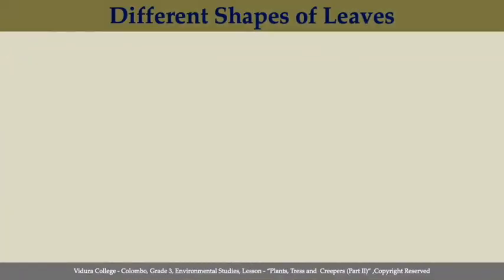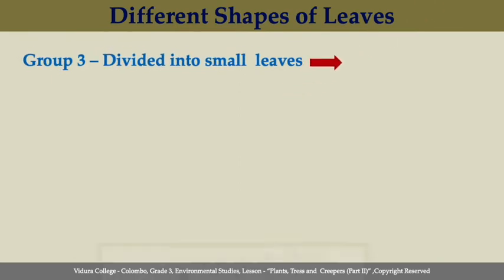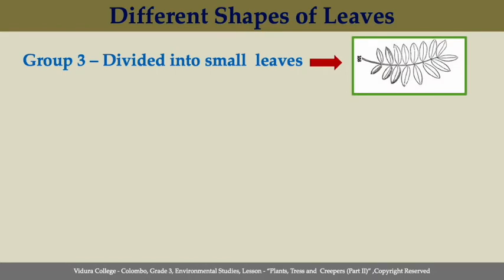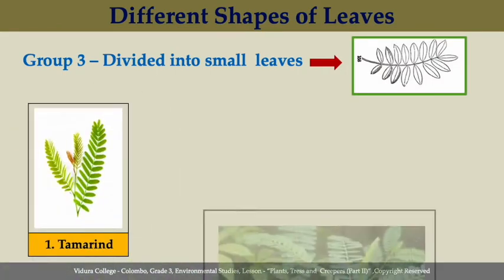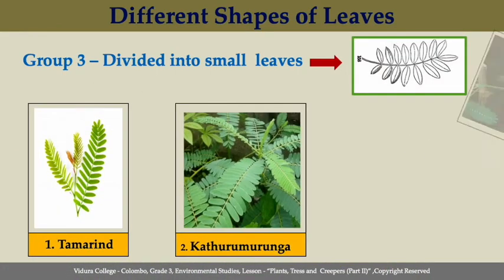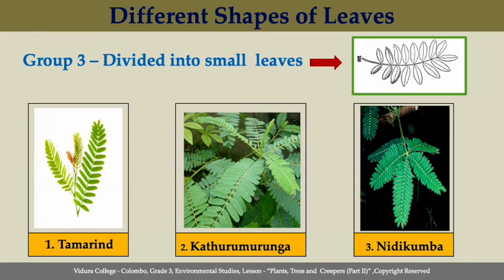The third shape, divided into small leaves. These leaves are very small leaves. Turmarine, kadramurunga, and nidikumba leaves can be taken as examples. When we talk about nidikumba plant, it is well known as mimosa and also known as sleeping plant.